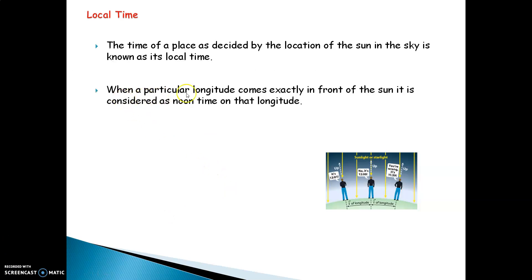When a particular longitude comes exactly in front of the sun, it is considered noon time on that longitude. The sun rises in the east and sets in the west. Exactly at 12 o'clock, or in the afternoon, you have the sun right above your head, and that is called the local time.